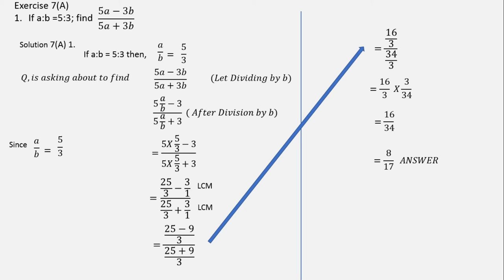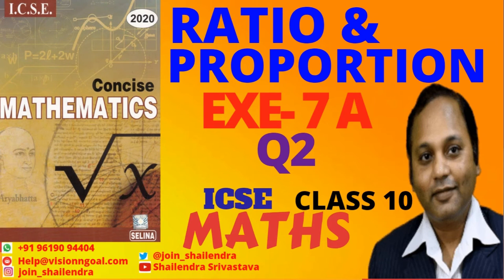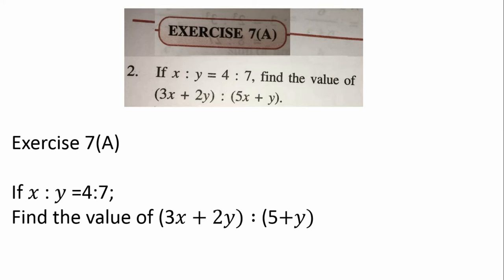So this is all about exercise 7a, question number 1. Now let's see exercise 7a, question number 2. Question number 2 is saying: if x is to y is equal to 4 is to 7, then find the value of 3x plus 2y is to 5x plus y.